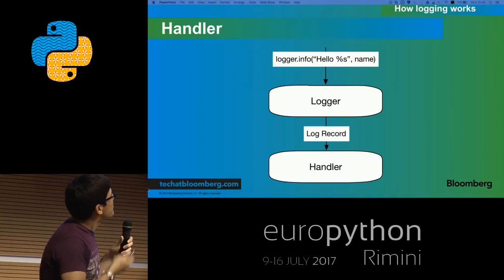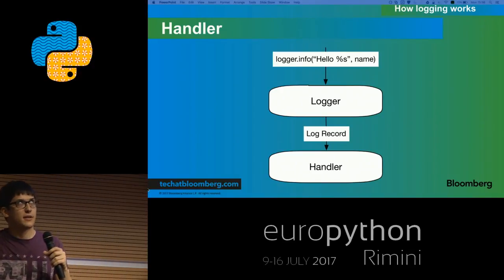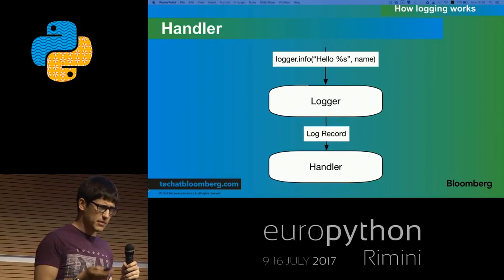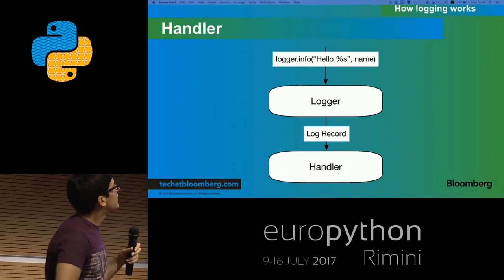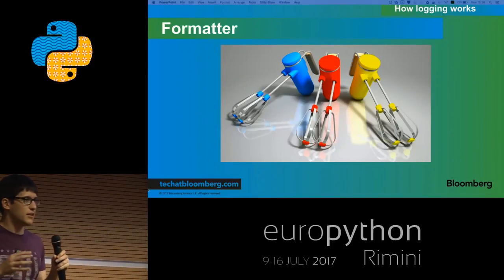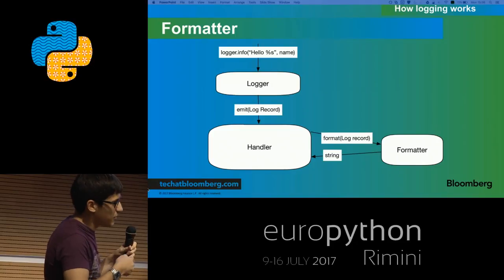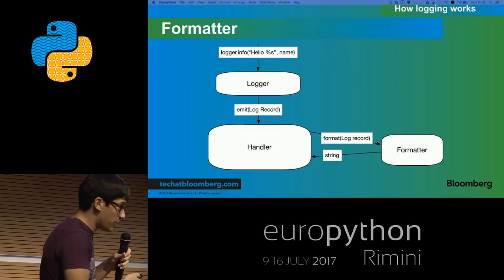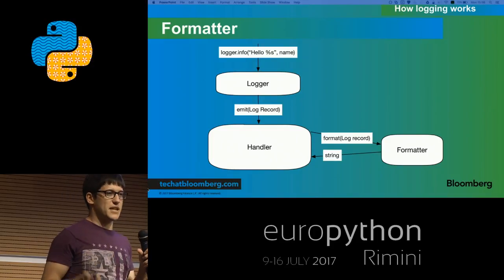We create the logger object, we call info — or whatever category — on it, we pass all the information, that calls the code in the logger class which creates the log record, and it passes it to the handler, which does its magic: it emits with its code and transforms it — puts it into a file or onto the screen. You might wonder how the handler knows how to put all this log record information into a file. That's where we have formatters. Formatters mix all the information in the log record and give you back a string.